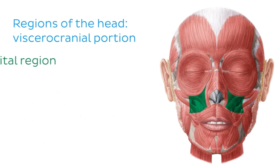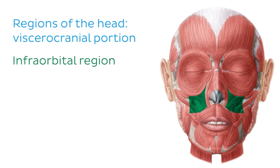The infraorbital region is also one of the bilateral regions of the face, meaning it is paired and located on both sides — a left and a right infraorbital region. As the name suggests, this region is located just inferior to the orbit.